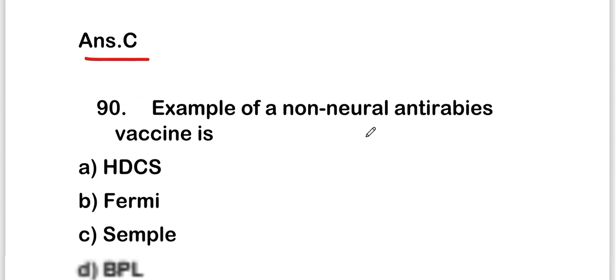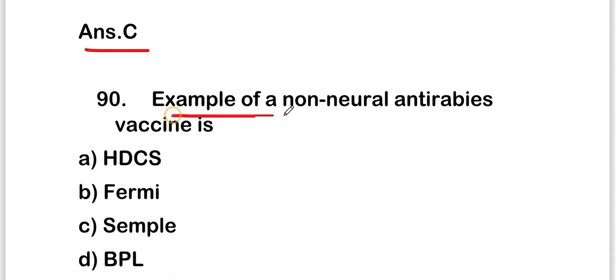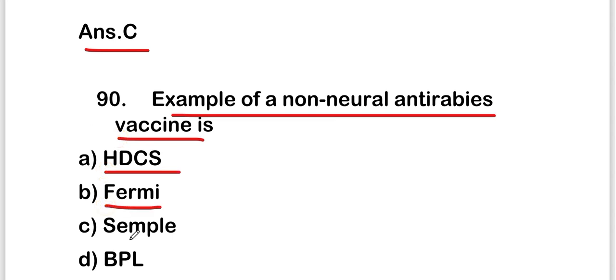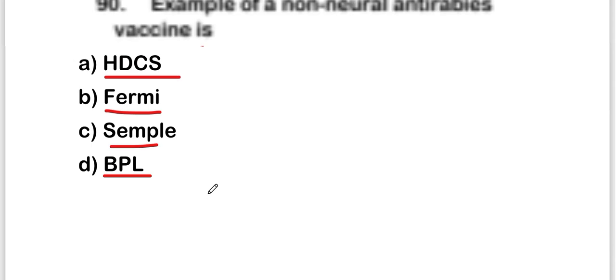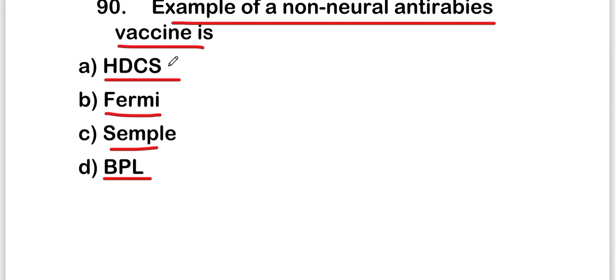The next question is: an example of a non-neural anti-rabies vaccine is HDCS, Fermi, Semple, or BPL? The right answer is option A — HDCS. HDCS means Human Diploid Cell Strain, which is a rabies vaccine.